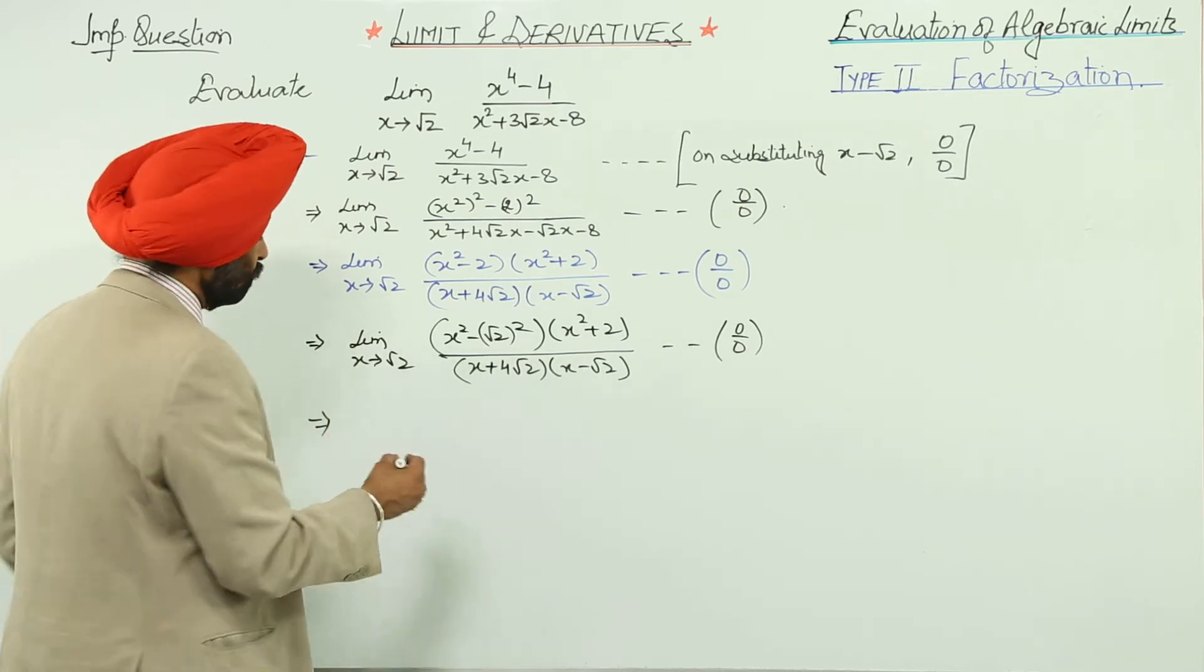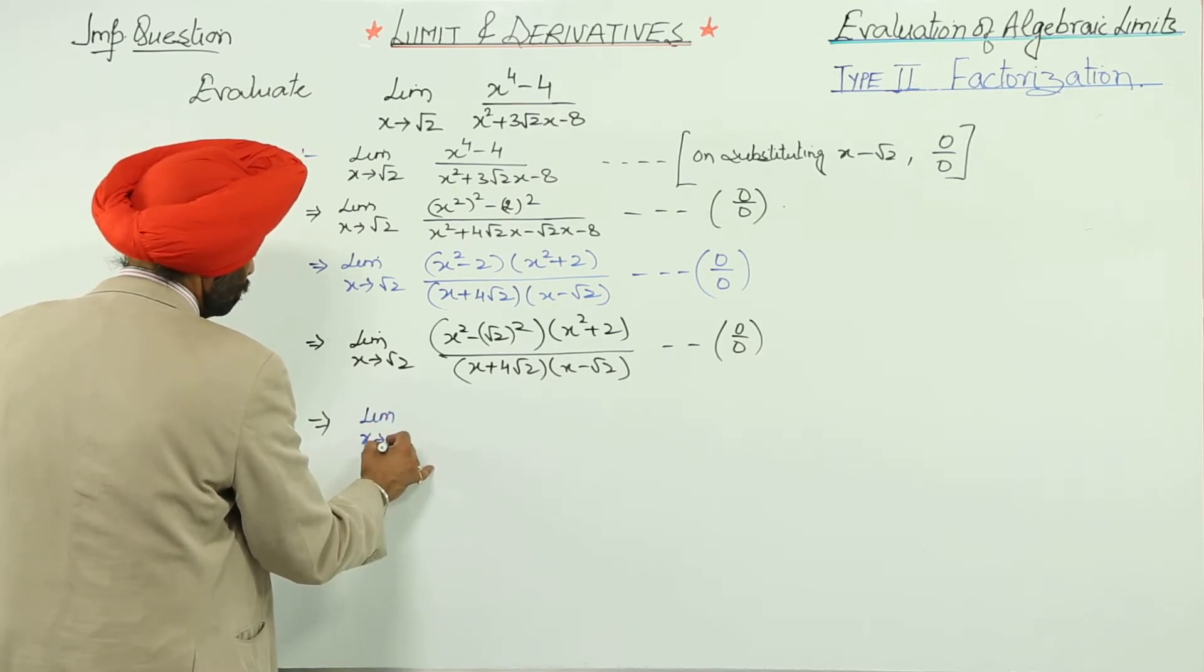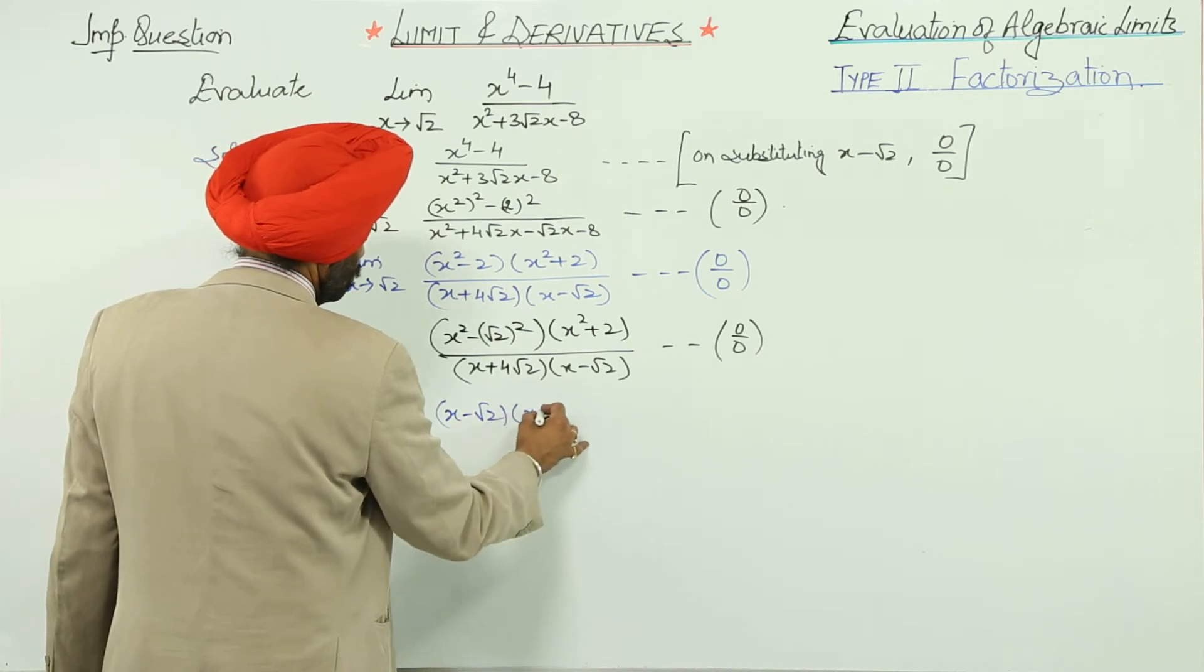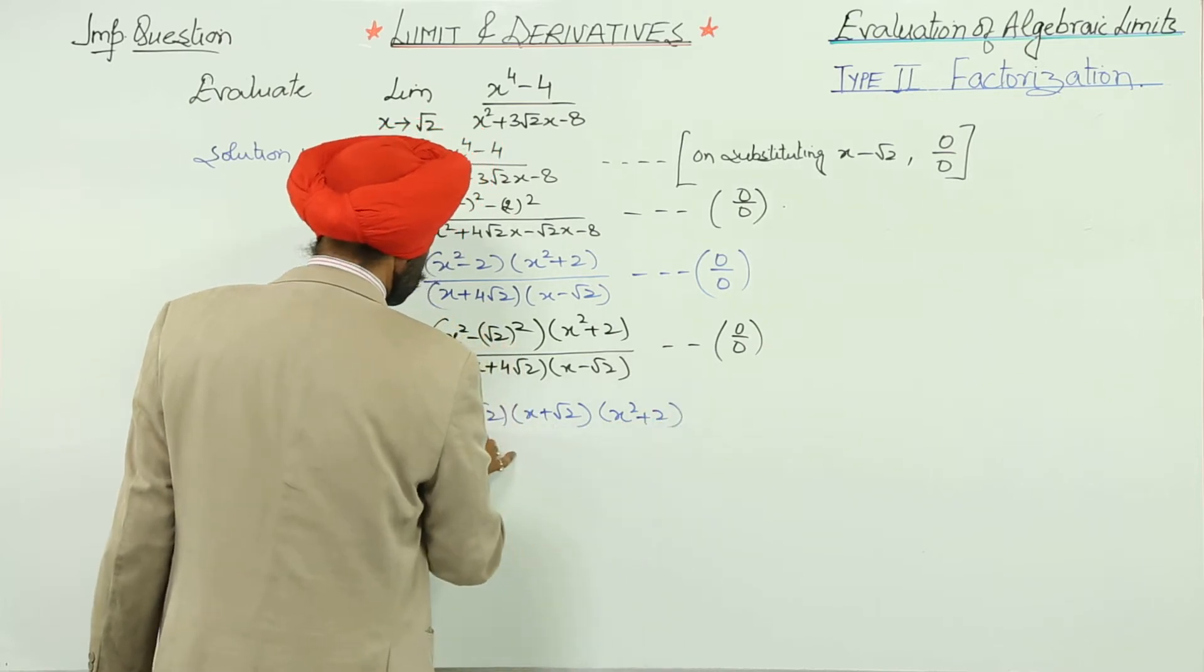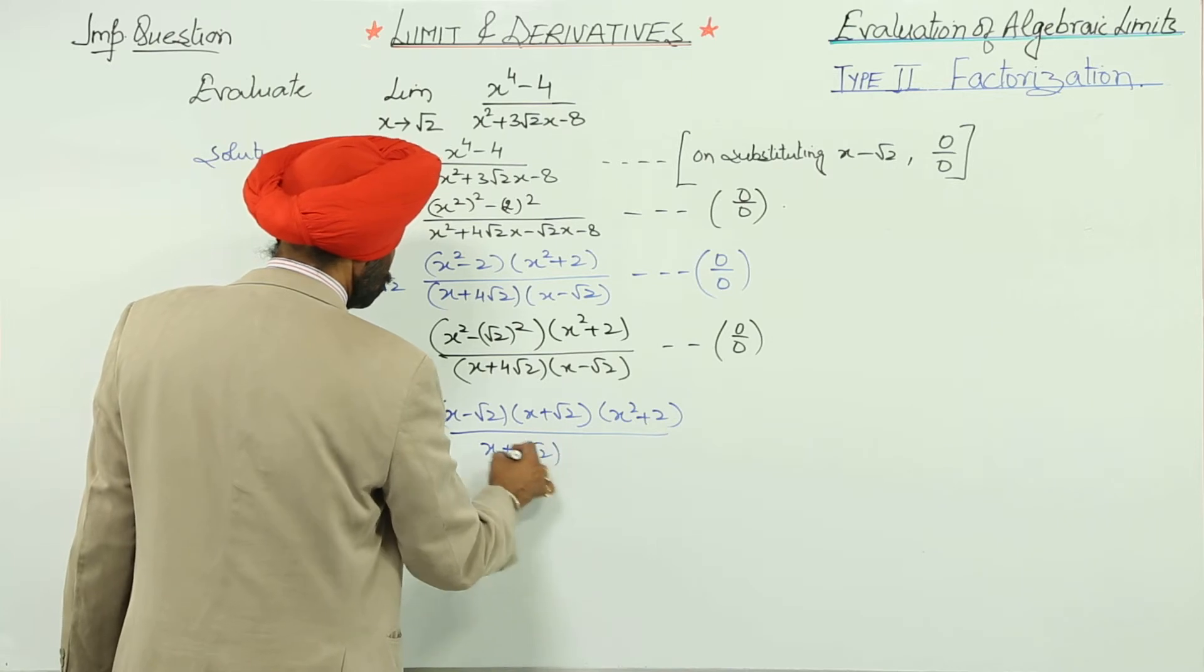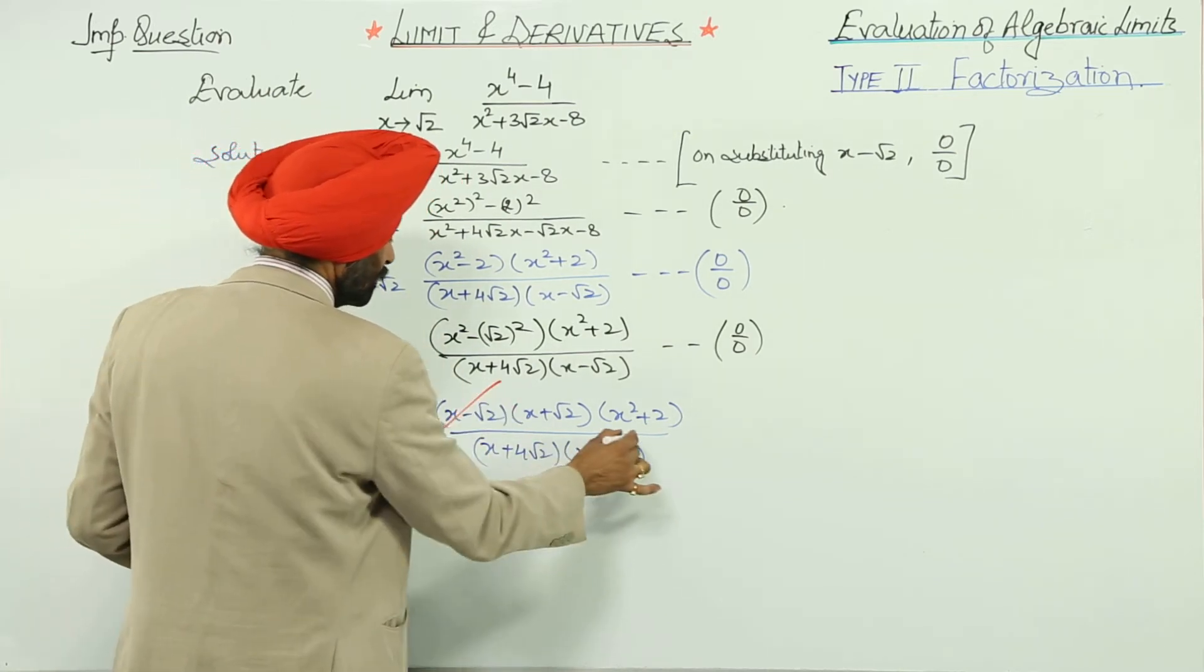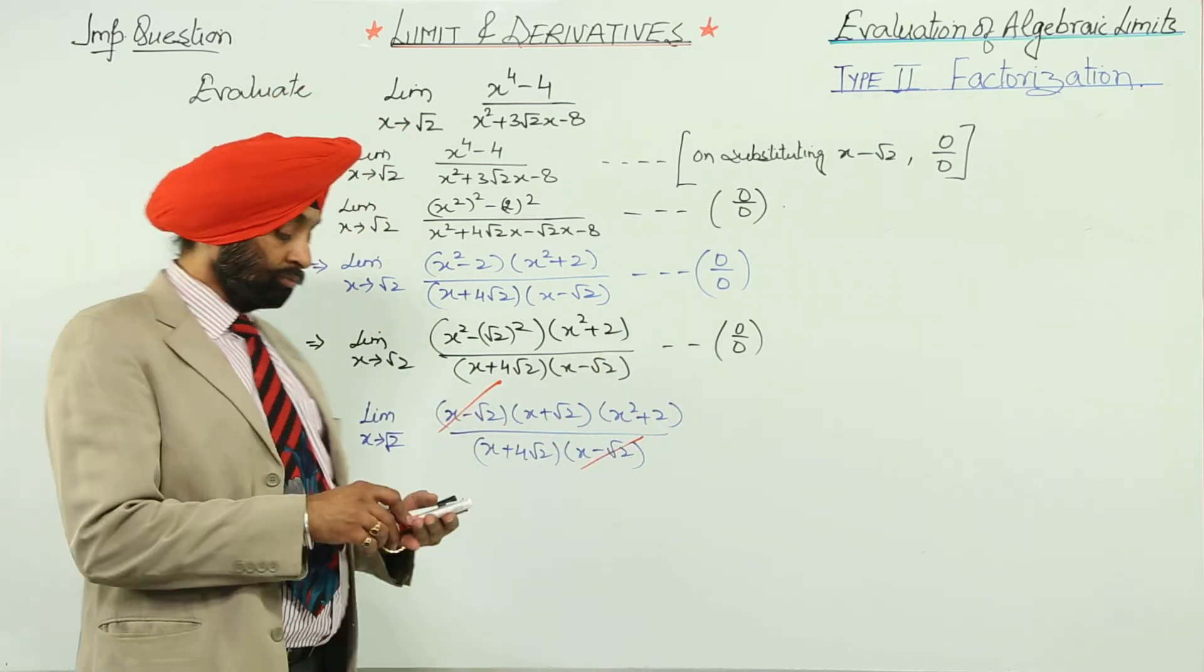Unless and until we are not canceling the common factors, we will be going like this. Now we can cancel the common factors. What are the common factors? This and this. And now the question we are having is not in the form of 0 upon 0.